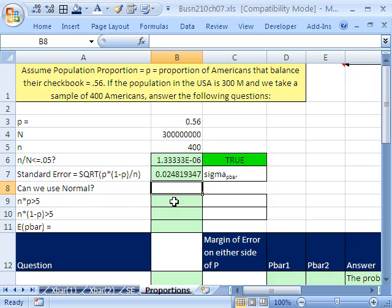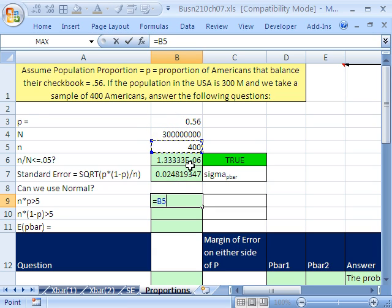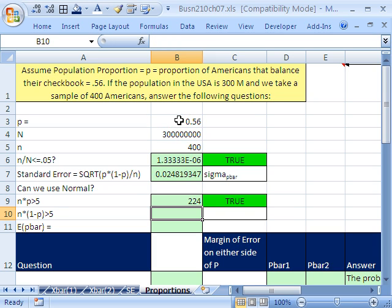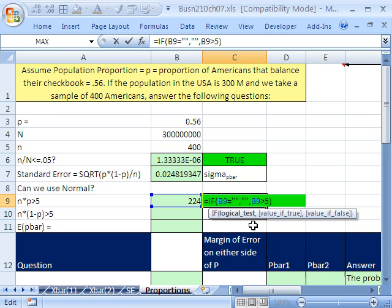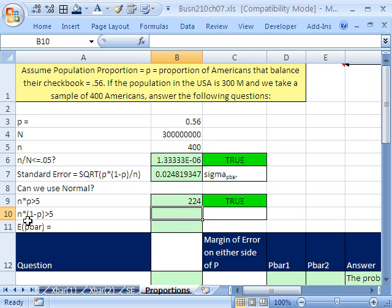We have to test whether we can use the normal distribution for our calculations. The first one is n times p has to be greater than 5. So we'll say equals n, the little n, that's our sample size, times our p. It says true there. There's a little formula there, and then conditional formatting. And then we have to check n times the complement of p. Equals our sample size times the complement of p. That one is true. So that means because we passed both of these tests, we can go ahead and use the normal distribution.